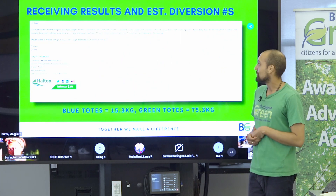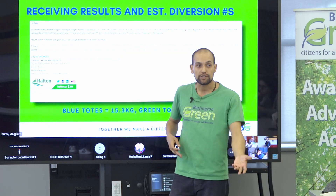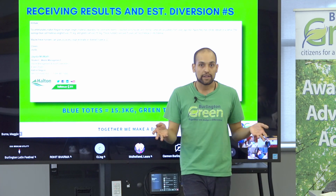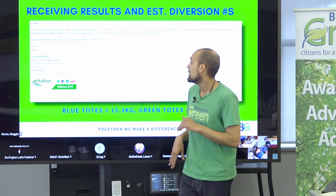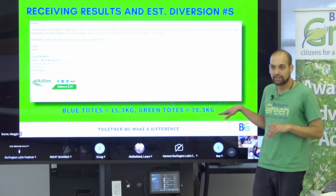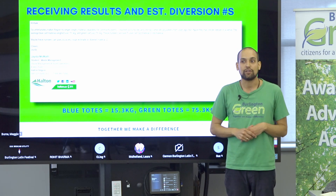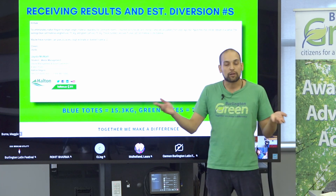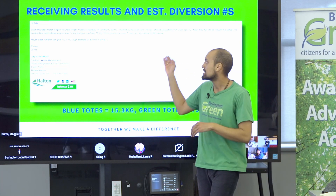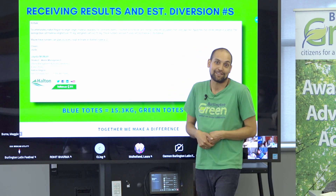Receiving results and diversion numbers: Halton Region used to give you the weight per event, but they don't offer that anymore, partially because they collect from multiple events at once. This chart provides general averages from Halton Region — so if you know you got 15.5 blue bins, you can do the math and estimate kilograms. For green bins the same applies. It's not a perfect science but it's the average rate, and it's something helpful for communicating your success after the event.